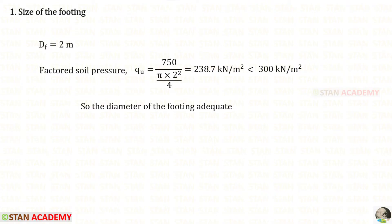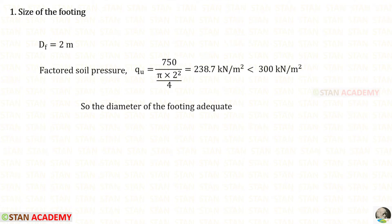Now we find the factored soil pressure using the formula PU upon area. PU is the load on the column and the diameter of the footing is 2 meter. Using the footing area, we get 238.7 kN/m², which is less than the factored bearing capacity. So the diameter of the footing is adequate.